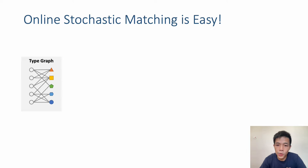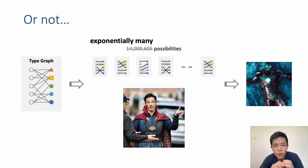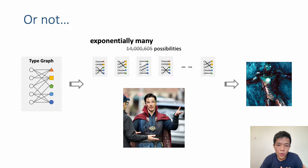In some sense, online stochastic matching is easy because we are given a complete description of how online vertices are generated, so we know all future possibilities and their likelihoods. We just need to be like Dr. Strange — consider all 40 million possibilities and find a plan using backward induction. There is one problem though: we don't just have 40 million possibilities but exponentially many. The state we need to maintain is the subset of unmatched offline vertices, giving 2^n possibilities for n offline vertices. Even superheroes cannot handle exponential computation.